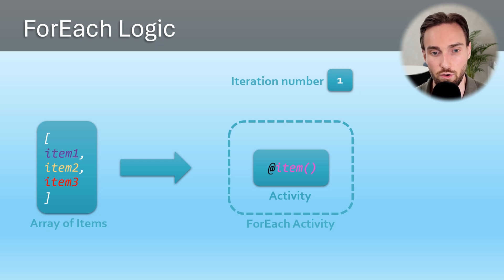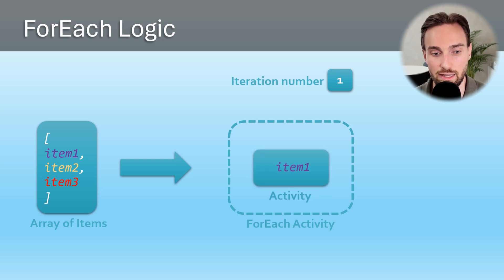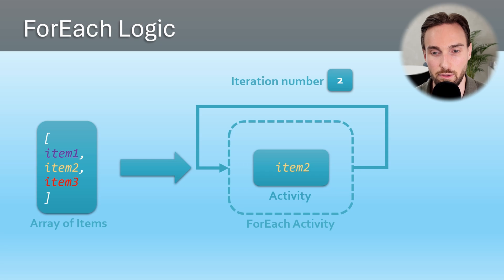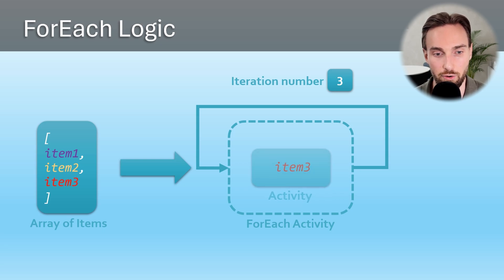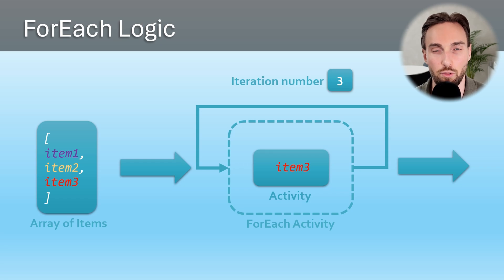During the first execution, the @item() reference fetches item 1 from our array and uses that value in our activities. After all activities execute, we start the second iteration — @item() now fetches item 2 from the list. After the second iteration completes, we have a third iteration, and @item() fetches item 3. Since this is the last iteration, once all activities finish for this iteration, we are ready to continue forward from the ForEach activity.